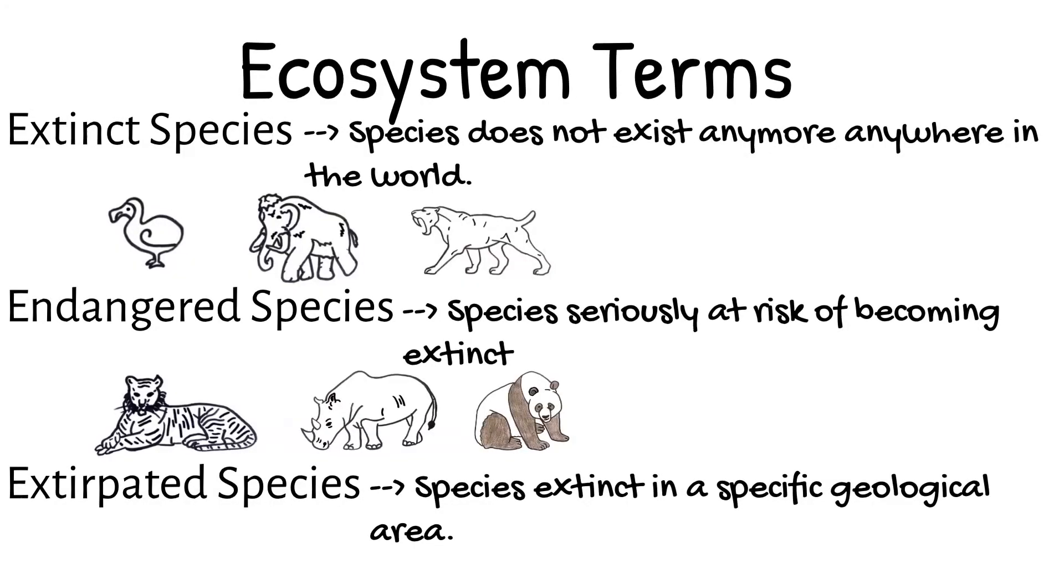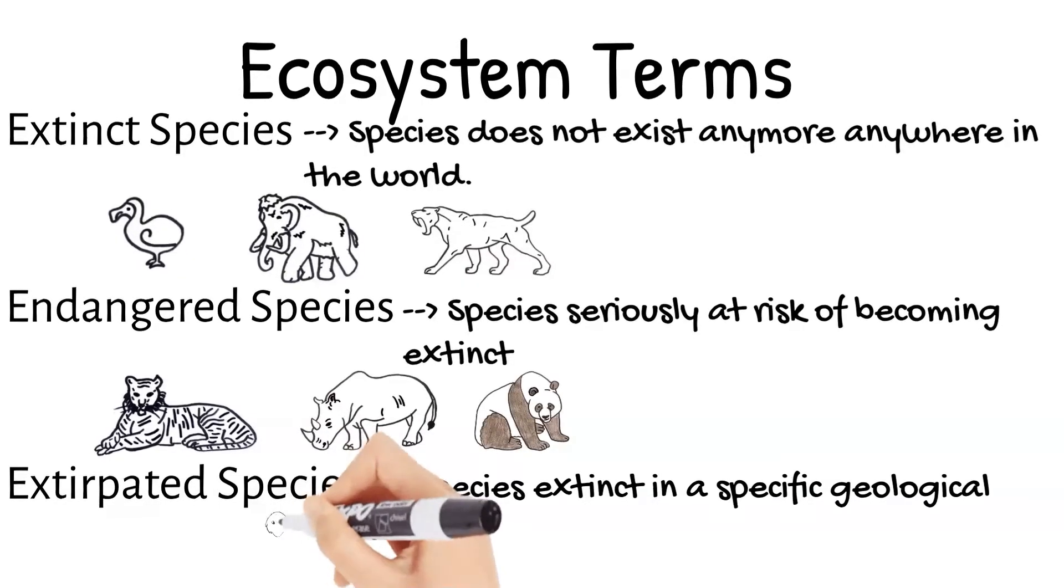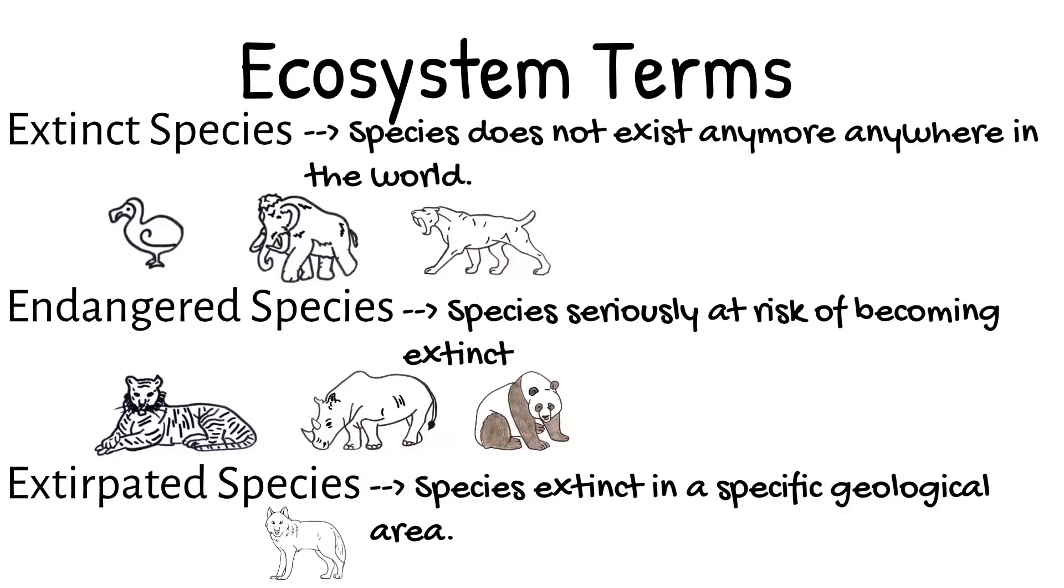An example of an extirpated species is the gray wolf. The gray wolf used to live throughout North America, Asia, and Europe. In 1926, the gray wolf was extirpated from Yellowstone National Park. It has since then been reintroduced in Yellowstone but is still extirpated from many of its old habitats.